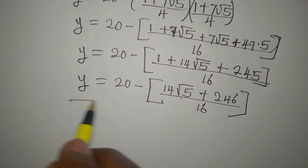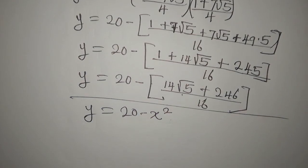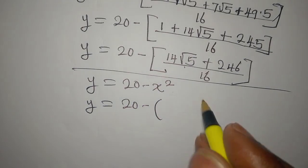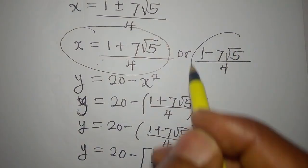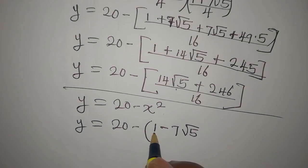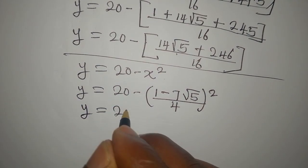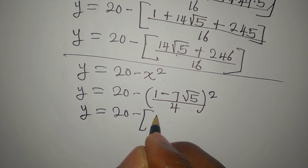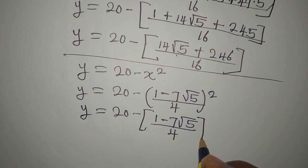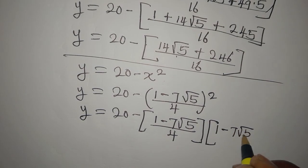To get the other value of y, remember y equals 20 minus x squared. This time, y will be 20 minus the bracket 1 minus 7 root 5 over 4, all squared. So y is 20 minus the bracket 1 minus 7 root 5 over 4, multiplied by 1 minus 7 root 5 over 4.